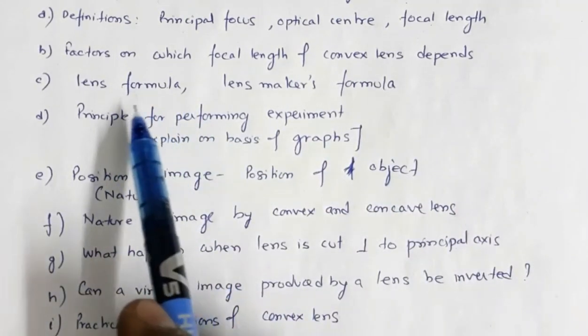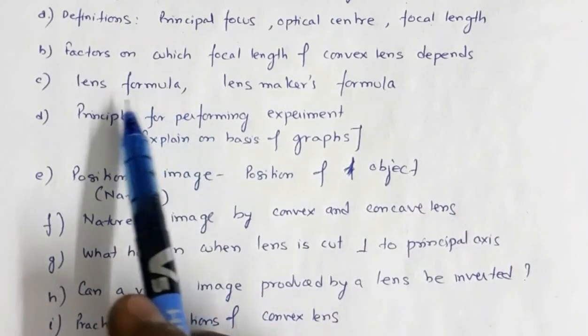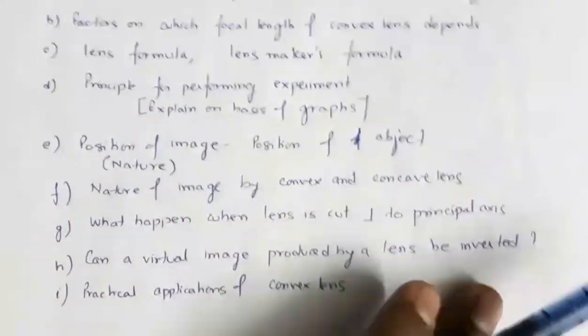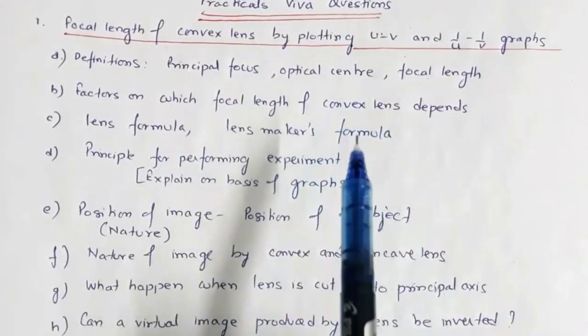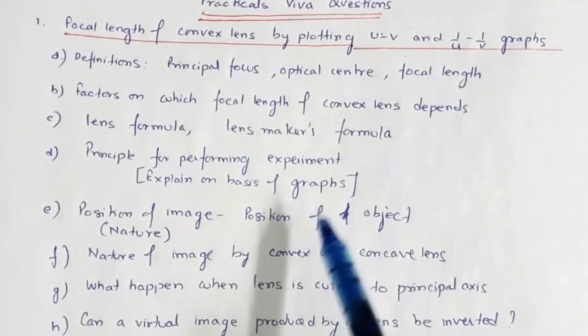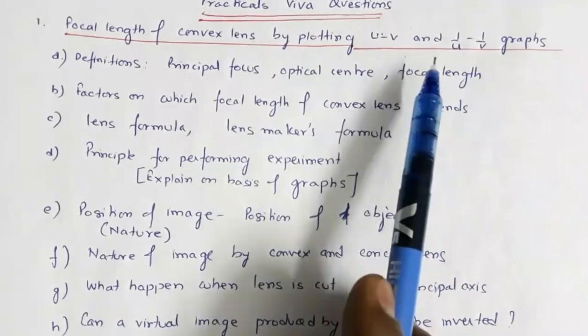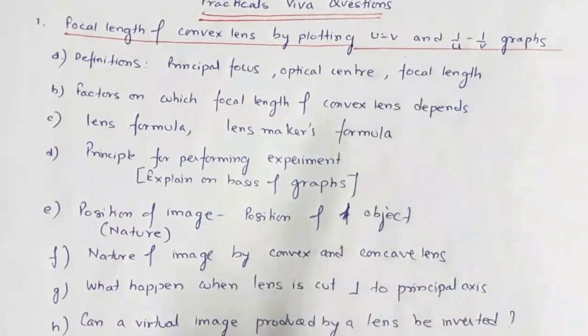Then, you may be asked to give what is the lens formula, expression for magnification. And what is the principle for performing this experiment? From what basis you calculate the focal length? That you have to explain on the basis of the graph, uv graph and 1 by u, 1 by v graph.